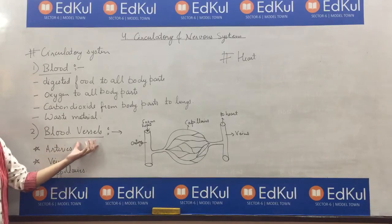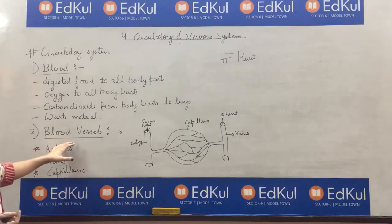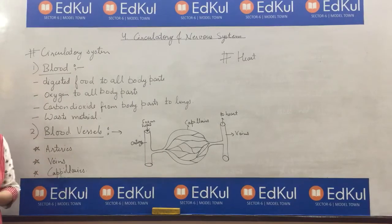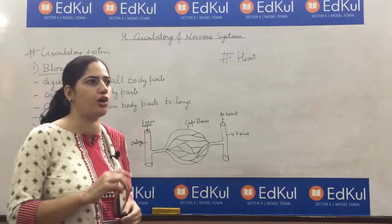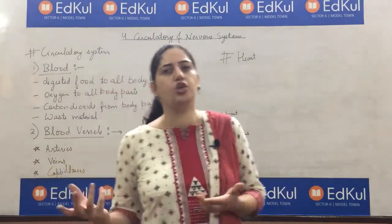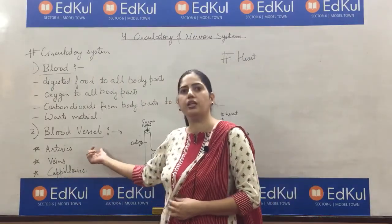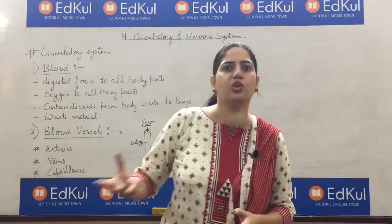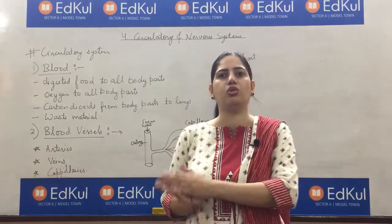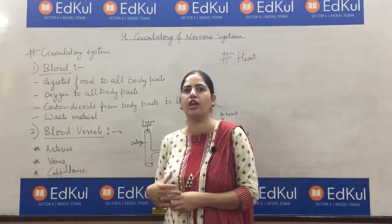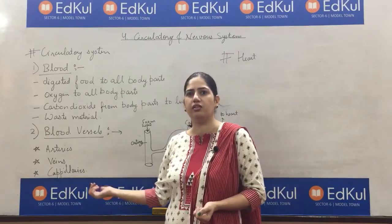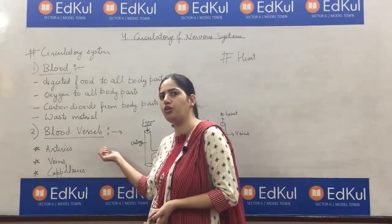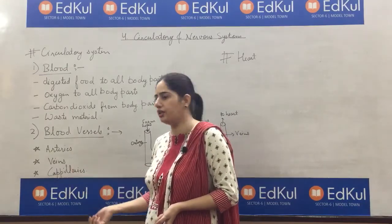Now, blood vessels. The second part of the circulatory system is blood vessels. Blood vessels are tubes that transport blood to different parts of our body. Blood vessels are of three types: arteries, veins, and capillaries.